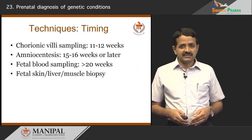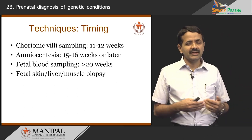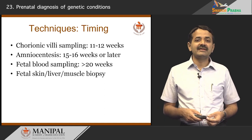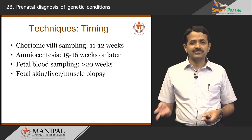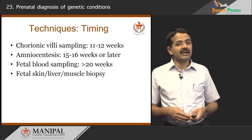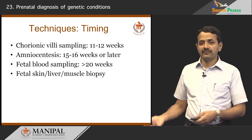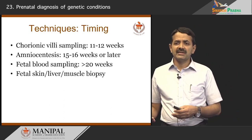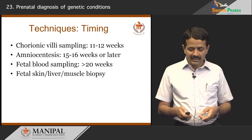I have listed the techniques and their timing. Chorionic villus sampling is done between 10 to 12 weeks, amniocentesis at 15 to 16 weeks or later, and fetal blood sampling usually after 20 weeks. Fetal skin, liver, or muscle biopsy, and fetal blood sampling, are rarely used nowadays because earlier techniques like chorionic villus sampling and amniocentesis with molecular testing can be done as early as 11 weeks. Indications for fetal tissue biopsy are becoming fewer, as fetal DNA analysis through CVS or amniocentesis covers most needs.